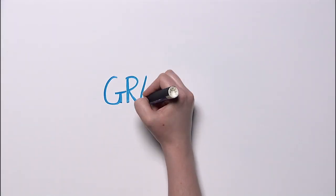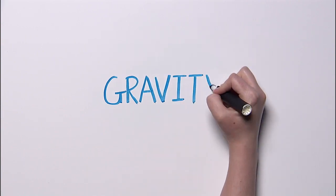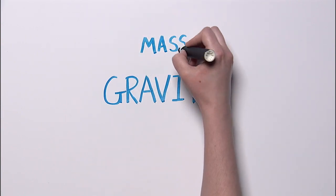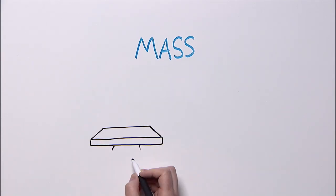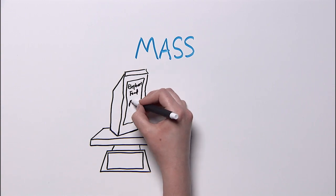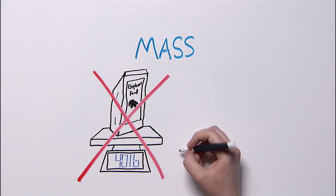Thankfully, gravity does exist, and that's because of mass. Mass might not be what you think it is. Mass isn't how much something weighs, but rather how much matter makes up an object.